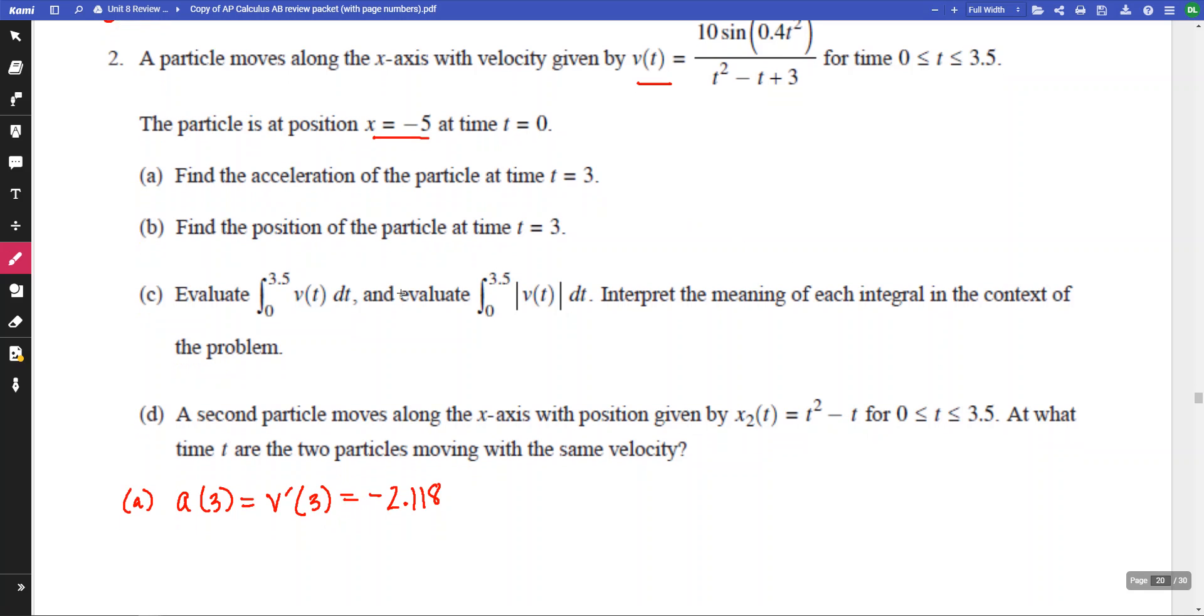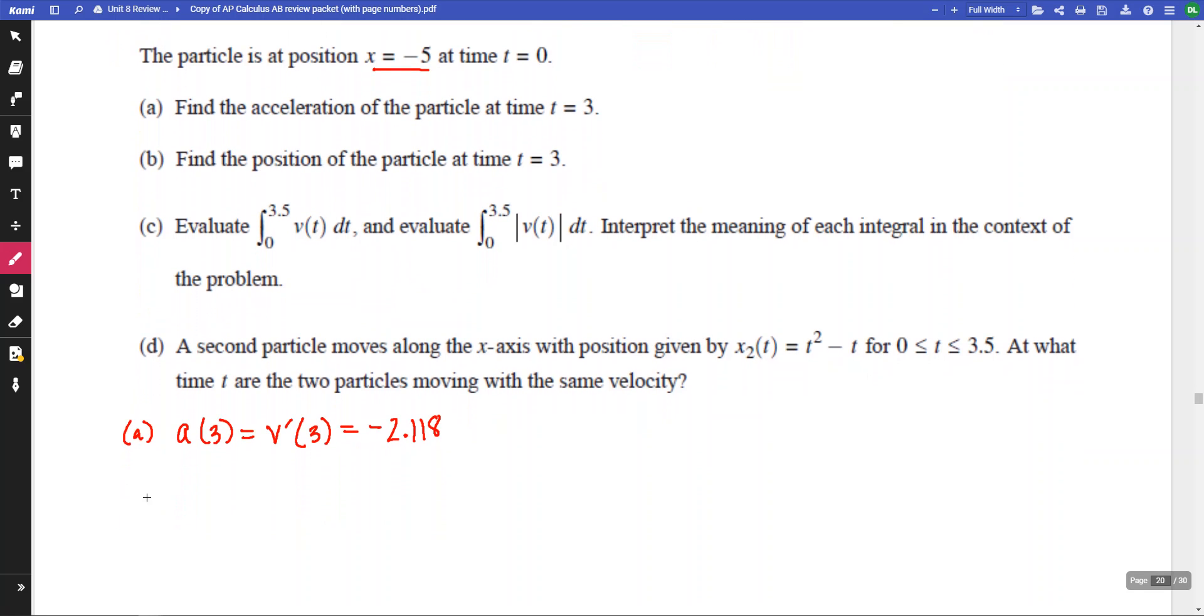Find the position of the particle at t equals 3. So for part b, we need to figure out the position. And at time t equals 3, the position is going to be negative 5, plus the change in position from 0 to 3 of our velocity. So that's our setup. Plus, how much did I change over the time interval?